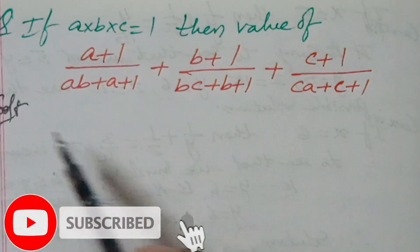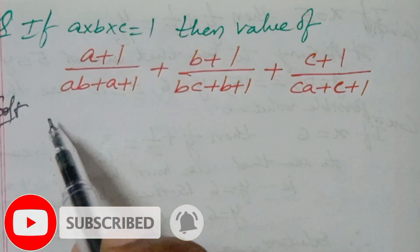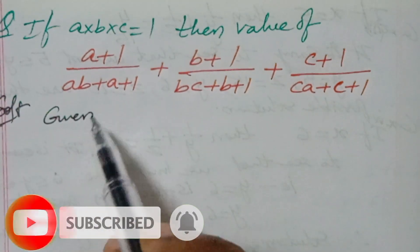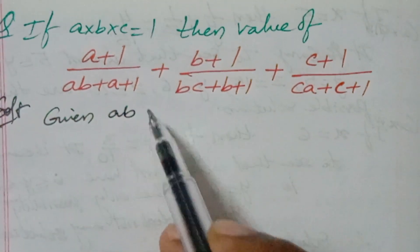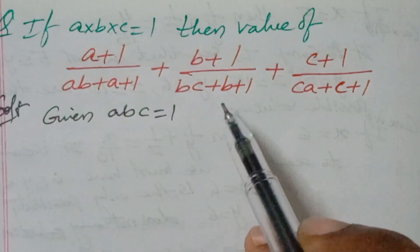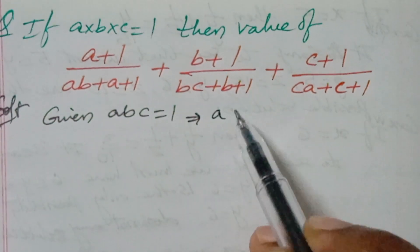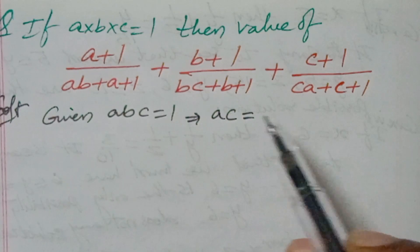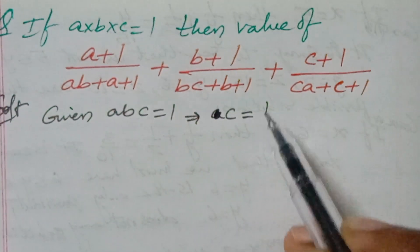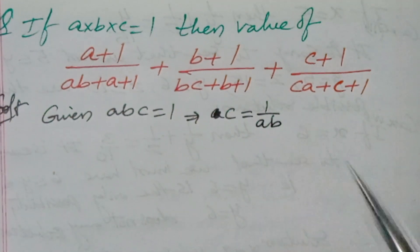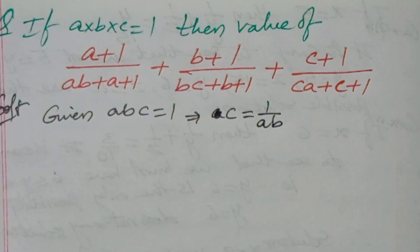You have to find the value. So here, first of all, given abc is equal to 1. Now I am writing c equals 1 over ab. So this is the logic you have to use here.